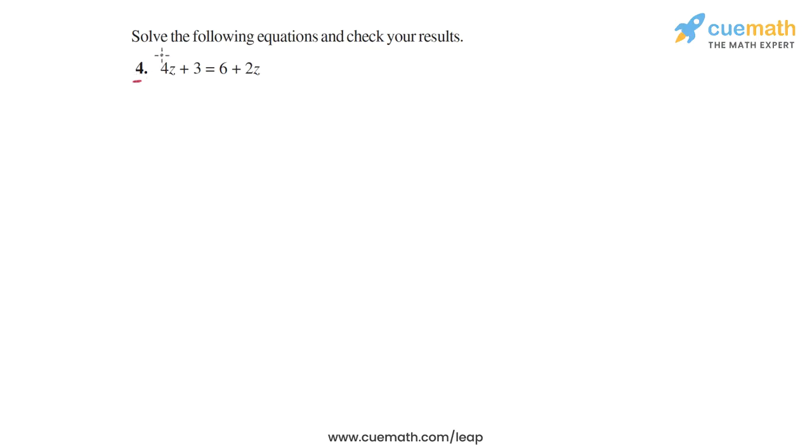In question 4, we have to solve the equation 4z plus 3 is equal to 6 plus 2z. So we have variable terms on both sides. We have 4z on the LHS, we have 2z on the RHS.